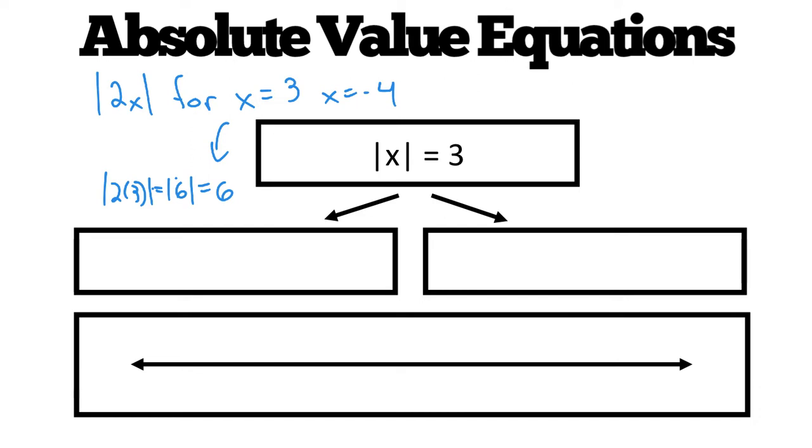Absolute value evaluated for negative 4, this expression, 2 times negative 4, which would be the absolute value of negative 8, which is 8. So what I want us to understand is that absolute value means a number's distance from 0.